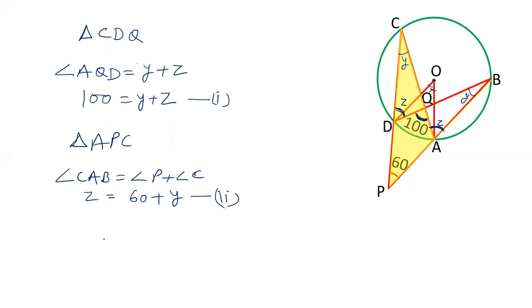In the first equation, put the value of Z. So we have 100 equals Y plus Z, and Z equals 60 plus Y. So substituting, we have 100 equals 2Y plus 60. 2Y equals 40. This gives us Y equals 20. So the value of angle C is 20 degrees. Angle B is also 20 degrees.